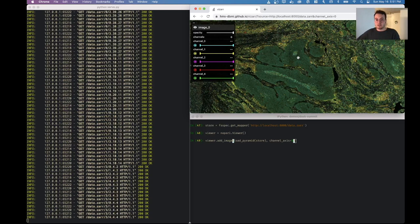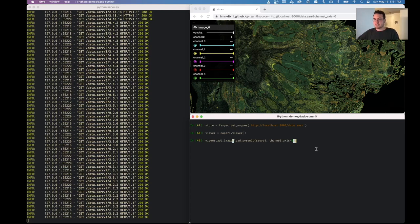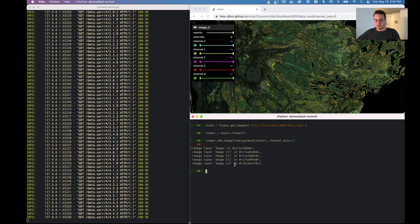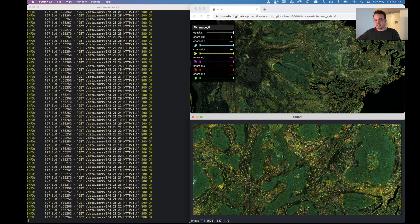And then similarly, in the Python ecosystem, I can connect to this remote data set in a separate process on my machine and view the data set in Napari as well. So here I have that multi-scale data set, except rather than it using the store directly, it's accessing an HTTP endpoint.